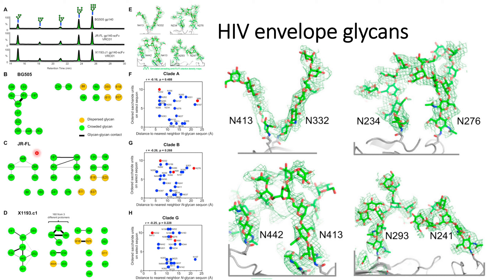Later on, they also performed crystallography imaging and identified the FoFc map, which is shown here in panel E. The zoomed image of the panel is shown on the side.